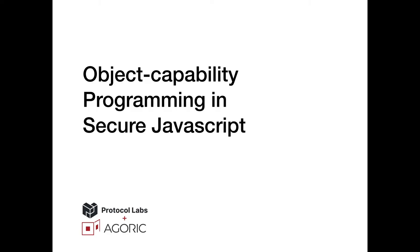How do we use JavaScript as a secure object capability language, and what are these object capabilities anyway?